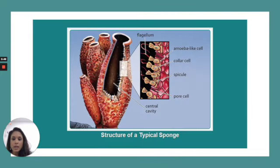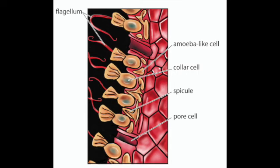Here is an image of a sponge, and let's talk about the various parts of the sponge. We have amoeba-like cells, and the amoeba-like cell is able to move around by extending their cytoplasm, which is also known as false feet. These cells also have a superpower called totipotence, which allows the cell to make any type of cell within the sponge.